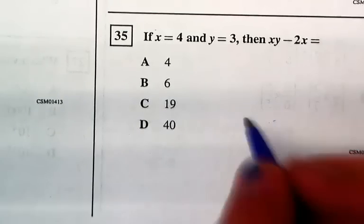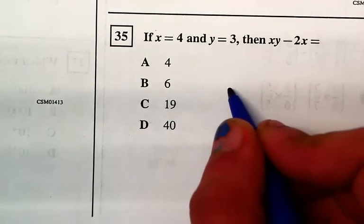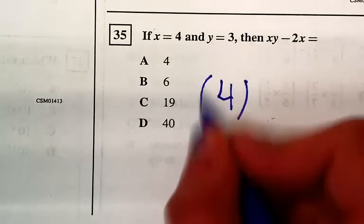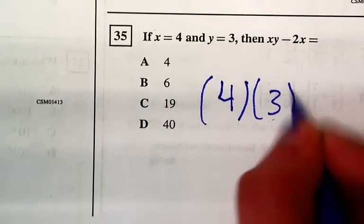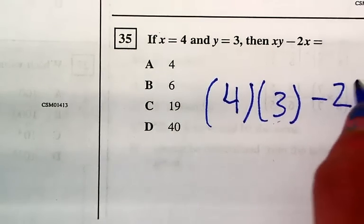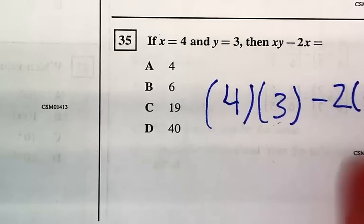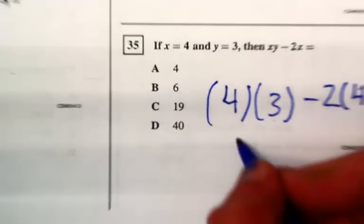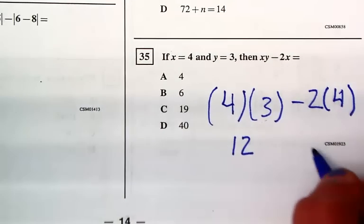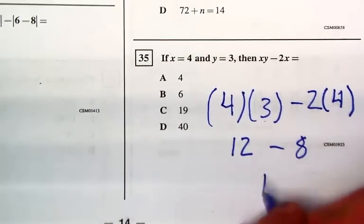First, you have to substitute the variables, so it's 4 times 3. Then you substitute X, it's 2 times 4. You multiply 4 times 3, which is 12. Then you multiply 2 times X, which gives 4, and then it's 8. Then you substitute that, and then it's 4, which is 8.